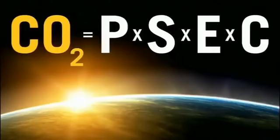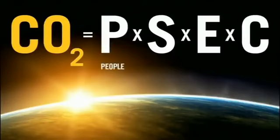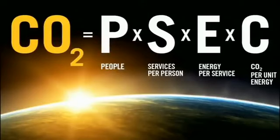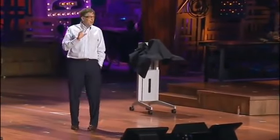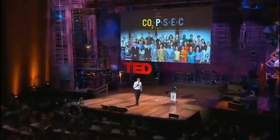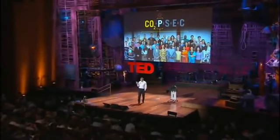This equation has four factors, a little bit of multiplication. So you've got a thing on the left — CO2 — that you want to get to zero. And that's going to be based on the number of people, the services each person is using on average, the energy on average for each service, and the CO2 being put out per unit of energy. So let's look at each one of these and see how we can get this down to zero. Probably one of these numbers is going to have to get pretty near to zero — that's back from high school algebra.